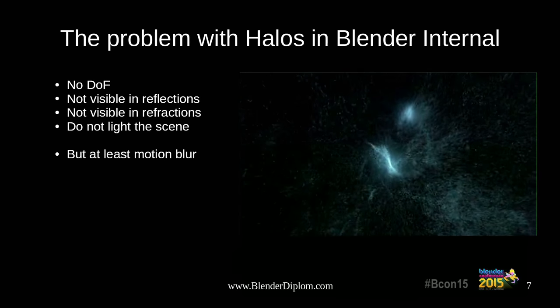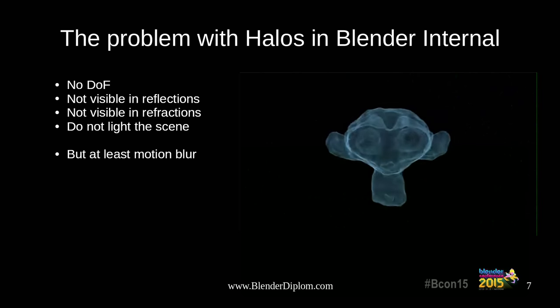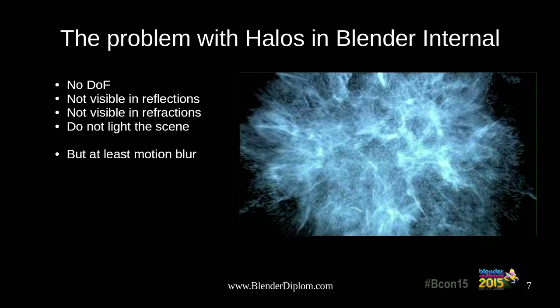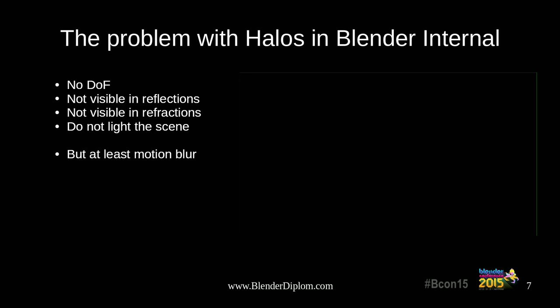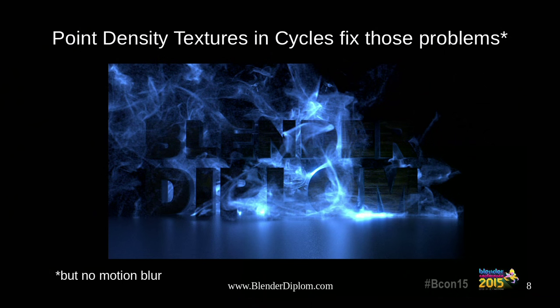The Blender Internal halos look cool, but there is no depth of field, they are not visible in reflections, and they don't light up the scene — though at least we have motion blur. Now let's see how things are in Cycles. The floor is reflective, they are lighting up the logo, and they also work with refractions. So we got all those issues fixed except motion blur — no motion blur unfortunately. But I've heard from the Blender developers that this will be fixed. At some point we will have really awesome point density textures in Cycles that do everything halo particles do in Blender Internal, but much more.